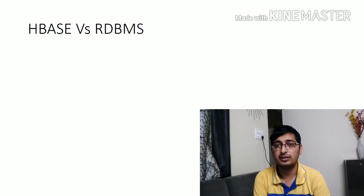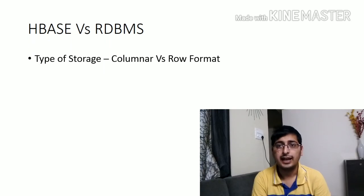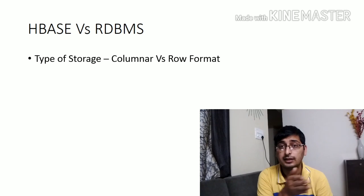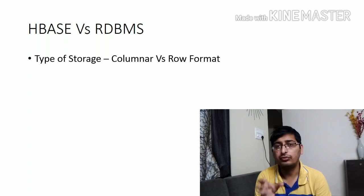The first difference is the type of storage used. In traditional databases, the format of storage is row format — we have a table with different columns, and a row is stored as-is in the file. In HBase, it takes all the values within a column and stores those values as a row — this is columnar storage.